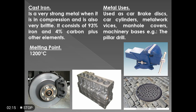The next example is cast iron. It is very strong when in compression and is brittle in nature. It consists of 93% iron, 4% carbon, plus other elements. The highest percentage of carbon in cast iron is 6.67 — we will see the reason behind this in upcoming lectures. Its melting point is 1200 degrees Celsius. Applications of cast iron include car brake discs, car cylinders, metalwork vices, and manhole covers.